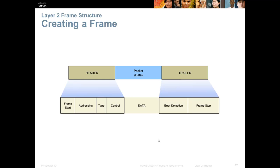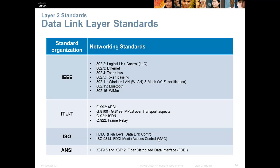At the end of the frame, we have a trailer. The key element of the trailer is error detection, usually in the form of a frame check sequence number — a number calculated before the frame is sent and recalculated upon receipt. If the numbers match, the frame is considered complete; if not, the frame may be corrupt and will be resent. Data link layer standards include Ethernet (802.3), token bus, token passing, Wi-Fi (802.11), HDLC, frame relay, and ISDN.